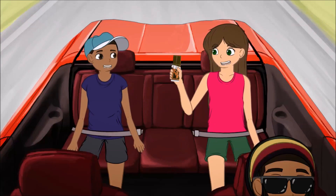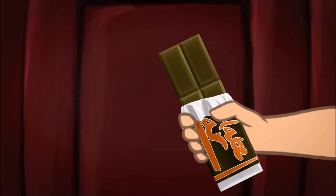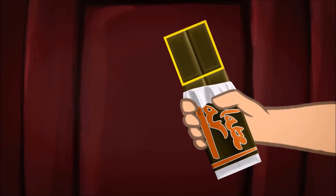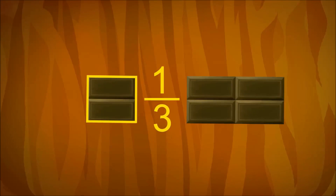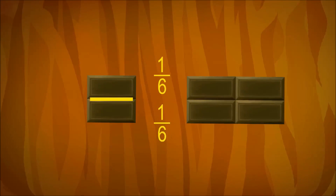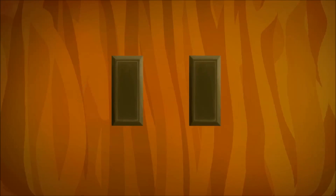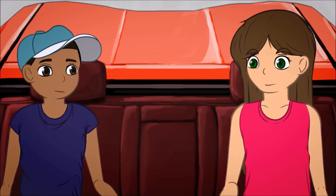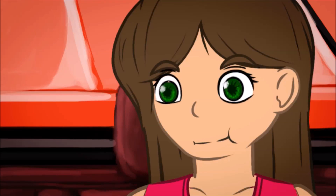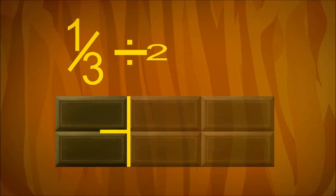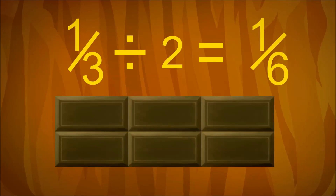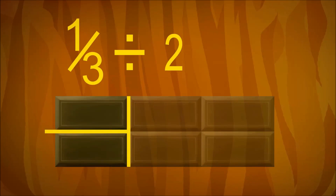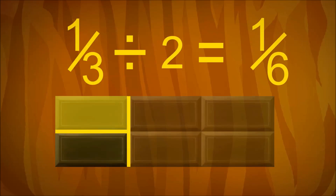Two friends were riding in the back of a car and shared a third of a candy bar. Draw one-third of the bar — one-third divided by two is one-sixth. They each want one-sixth of the Twix. Draw one whole candy bar and then the fraction, divide it by the whole number, and find the quotient.